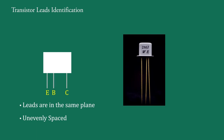If the transistor looks like this, then its central lead is the base. The lead nearer to the base lead is the emitter, and the remaining lead is the collector. The manufacturers of this type of transistor have totally stopped production, so they are no longer available in the market.